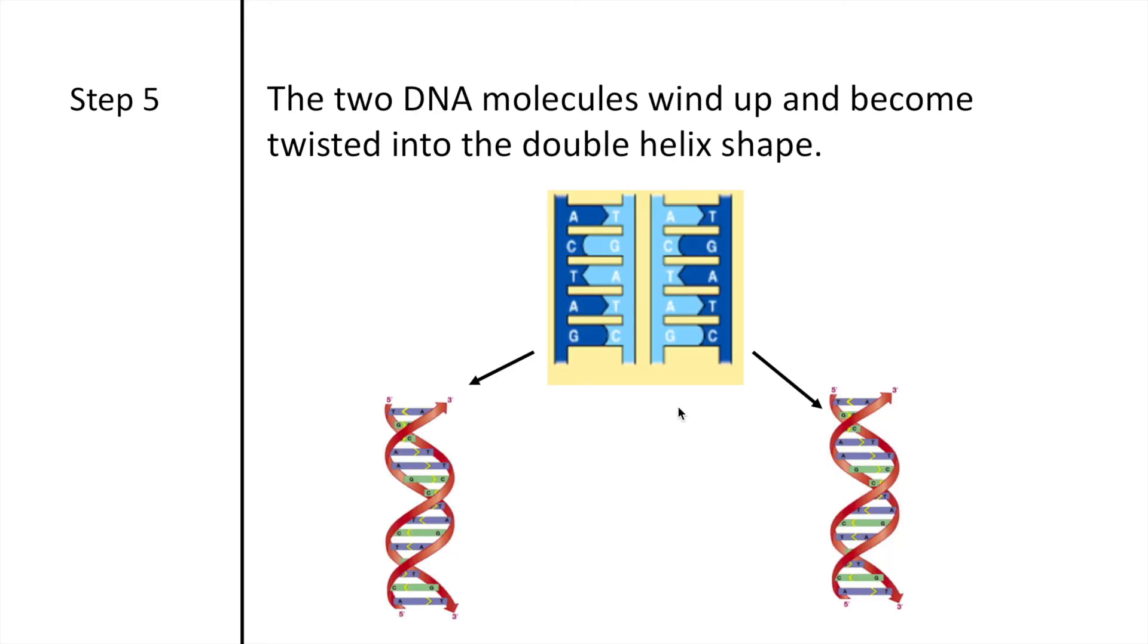Step five, the two DNA molecules that have been pulled apart and then added in with new nucleotides, they become twisted again in order to fold back in into that super coil that we know will fit into the chromosome. And so this creates the double helix shape, which is what is showing here and over here.